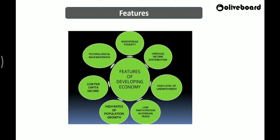Technology plays a major role between developed and developing economies. Technology and innovation involve much cost, and developing nations had so many basic issues to address first before reaching technology. Now, we are slowly improving on the technology side, controlling our population, and participating in foreign trade. We are identifying our problems and targeting them, trying to solve them. These are all the features of a developing economy.